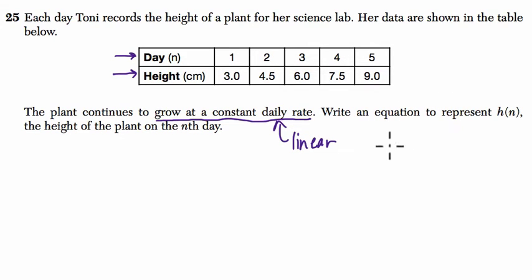Write an equation to represent h of n, so the height based on n, the number of days. That's what that means, the height of the plant on the nth day. So n is representing days and h of n is representing the heights.